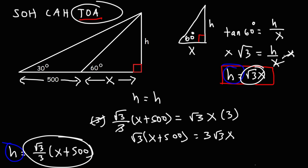Now at this point, I'm going to multiply both sides by 3. So that these could cancel. And so I have the square root of 3 times x plus 500, and that's equal to 3 root 3 times x. Now I'll also want to get rid of the square root 3 symbol. So I'm going to multiply both sides by the square root of 3. So the square root of 3 times the square root of 3 is the square root of 9, which is 3.